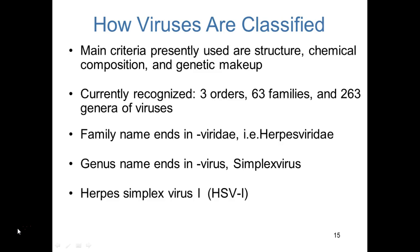Typically, viruses are named by family name, which ends in '-viridae' — for example, Herpesviridae. The genus name ends in '-virus,' such as Simplexvirus. Common names are also used, such as herpes simplex virus 1, shortened to HSV-1. You've heard of HPV — that's human papillomavirus, with Papillomavirus as its genus name.